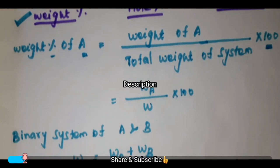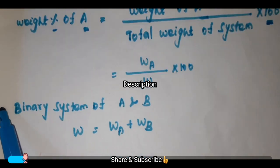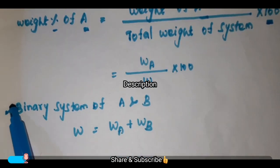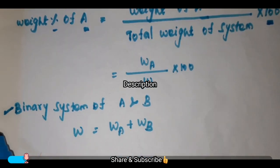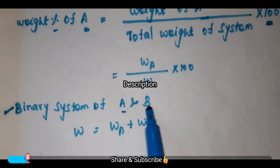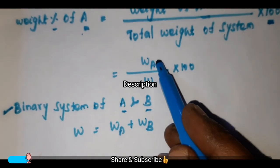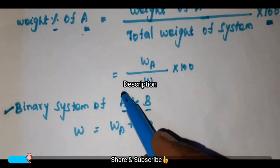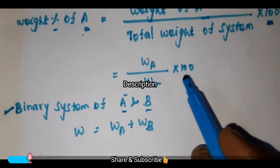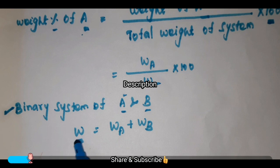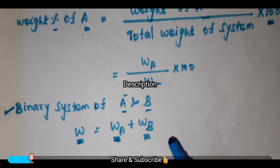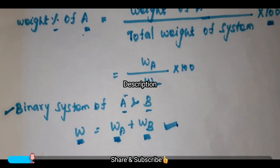For example, if you consider a binary system — that is, your solution contains only two components — a binary system of A and B. The weight percentage of A: you take weight of A, and for total weight of the system, W is equal to weight of A plus weight of B. So it gives the weight of the total system.